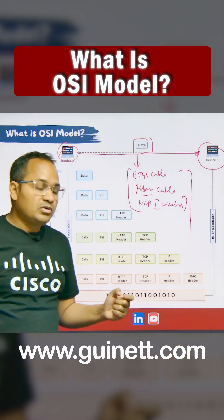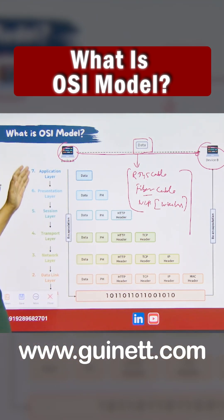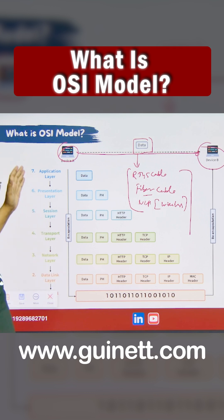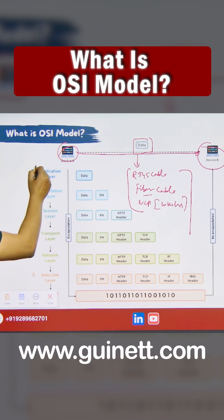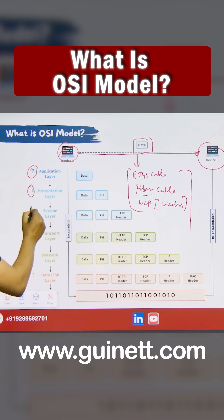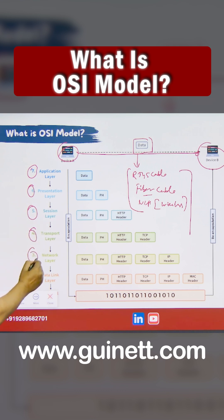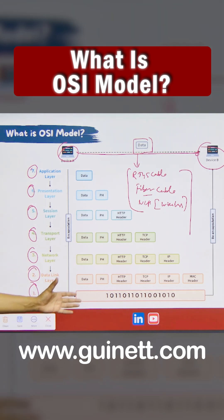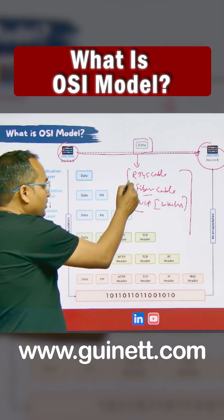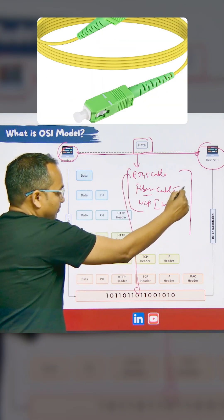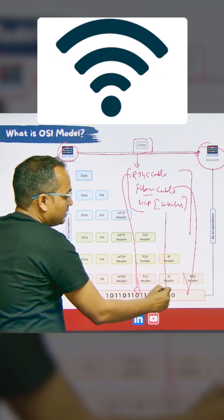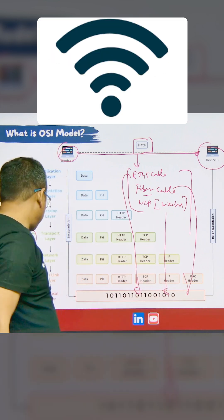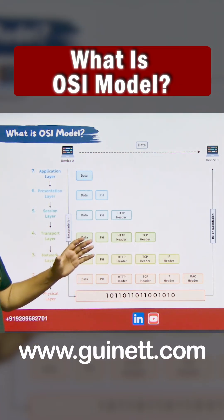The most important thing is that whenever a packet is going to be sent using any media, they have to follow the hierarchical architecture approach — meaning they have to go through all seven layers: Application, Presentation, Session, Transport, Network, Data Link, and Physical. The Physical layer is the actual layer — it could be your RJ45 cable, fiber cable, or wireless media. But they all have to follow the same approach.